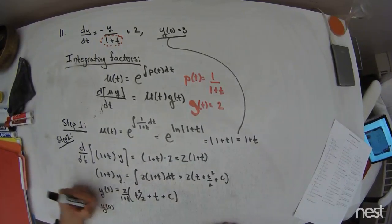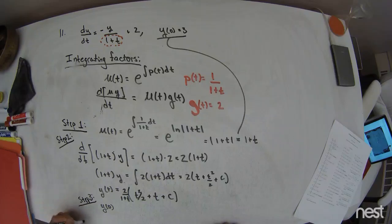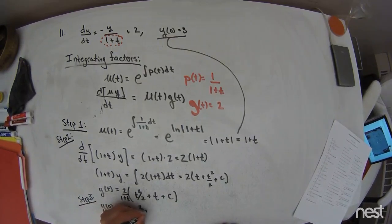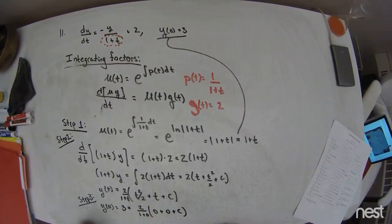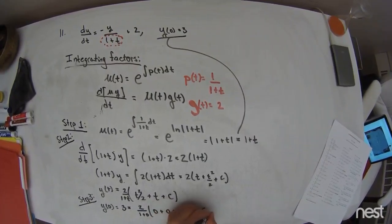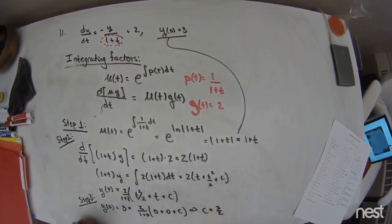Application of the initial condition, which I'll call step 3, gives y of 0 is equal to 3. So this is equal to 2 over 1 plus 0, 0 plus 0 plus c. And so c must be equal to 3 halves.